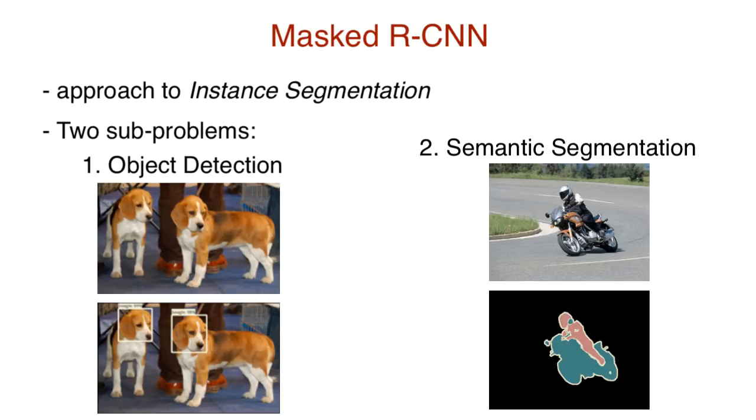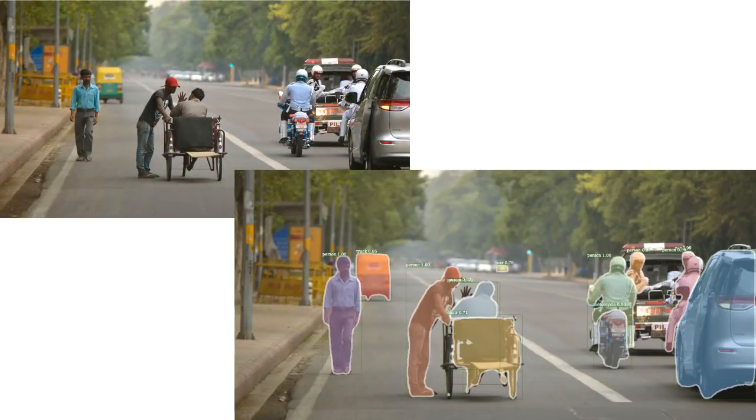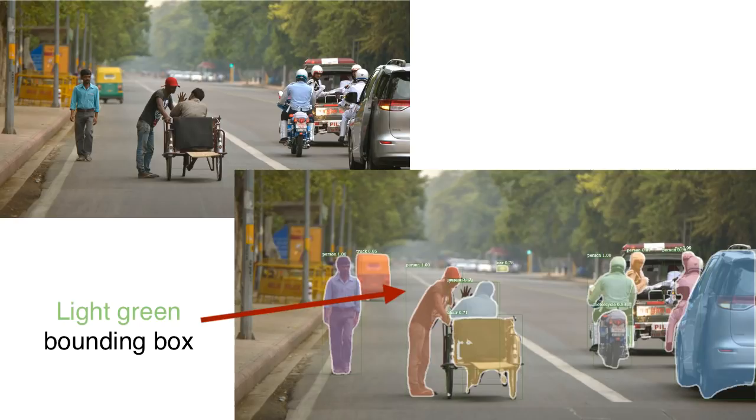Using object detection and semantic segmentation together, we get instance segmentation. In these images, the bounding box is created from object detection, and the shaded masks are the output of semantic segmentation.